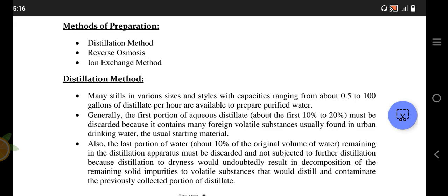The methods of preparation, I will discuss these three. In distillation, I have said before that you have to discard the remaining 10 to 20%, but it's actually the first 10 to 20% you have to discard because it contains microorganisms, impurities, and residues. Also, the last 10% should be discarded and distillation should be stopped because it will result in the decomposition of the remaining solid impurities and they may distillate and contaminate the previously collected portion. The first one, 10 to 20%, is discarded because it contains volatile substances which can be condensed and distillated. Distillation is carried out in stills of various sizes and styles with capacity 0.5 to 100 gallons.